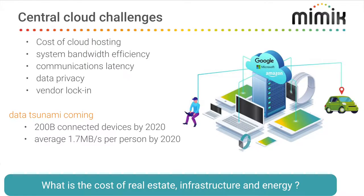The other issue is vendor locking. There are basically three companies controlling about 90% of the data we consume — at least in North America and Europe: Amazon, Google, and Microsoft. They're amazing companies and have done a lot, but it doesn't make sense for all our data to be controlled by three large companies. In China we have Alibaba and others as well. There's too much power being concentrated in the hands of a few.